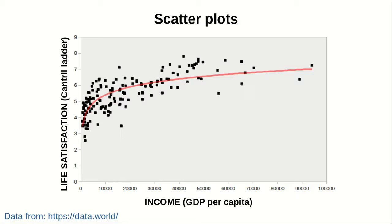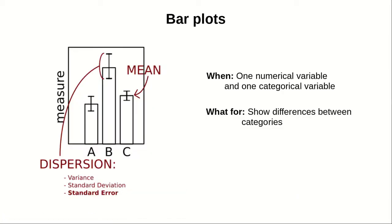When you have one numerical variable and one categorical variable, what you usually use are bar plots. Bar plots show differences between categories. For instance, you have categories A, B, and C, and each one of the categories has several measurements, and you want to compare the difference between them. So you compute the mean of each one of these groups, and then you add to the bars a measure of dispersion, which can be the variance, standard deviation, or something called the standard error.